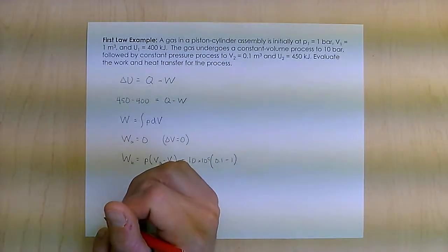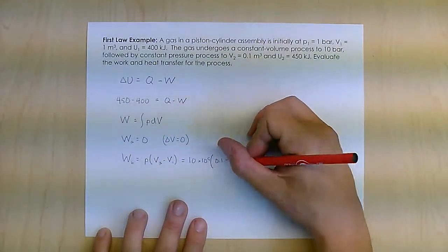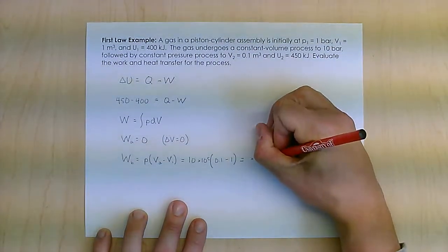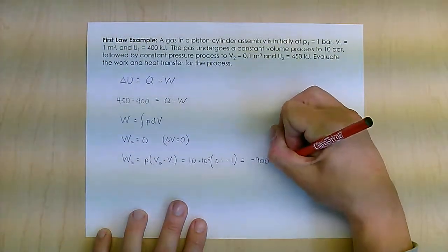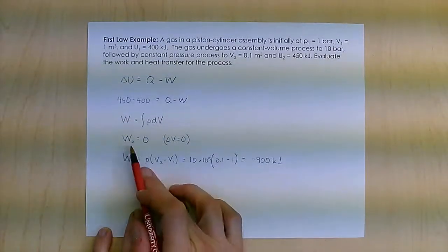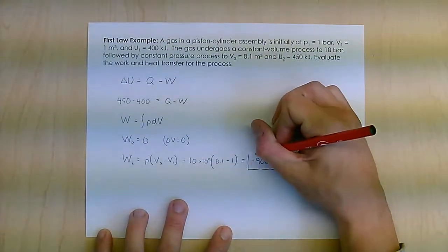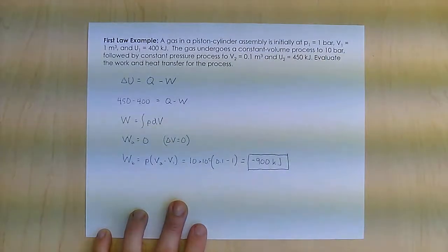That gives me a work of negative 900 kilojoules. That's all of the work because the first part has no work, the second part has negative 900.